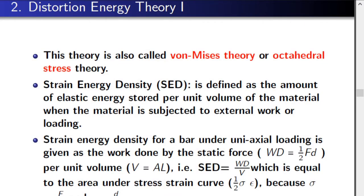The second theory for ductile materials is the distortion energy theory. This theory is also called the von Mises theory, or it is also known as the octahedral shear stress theory.